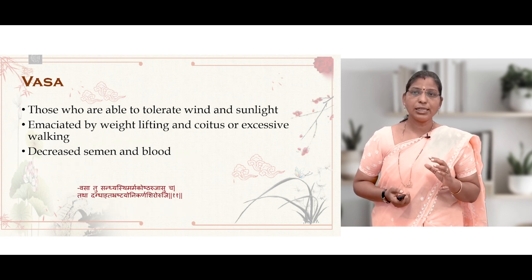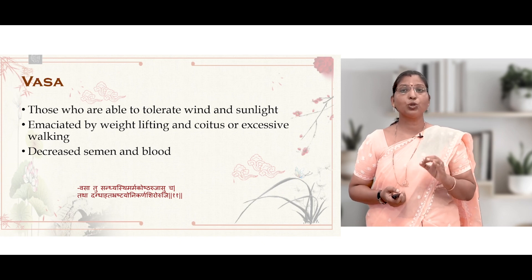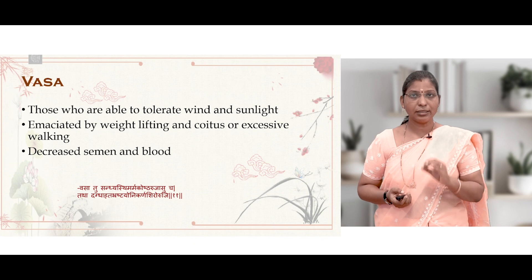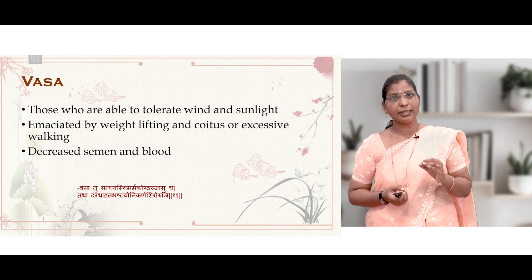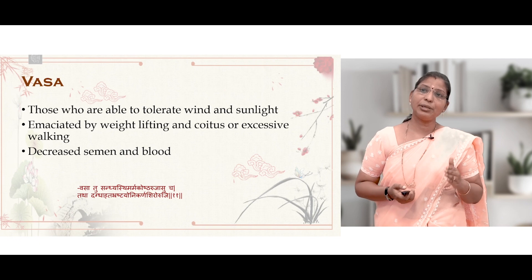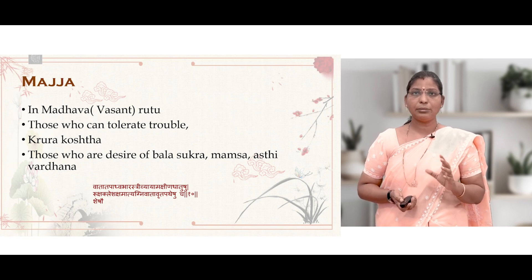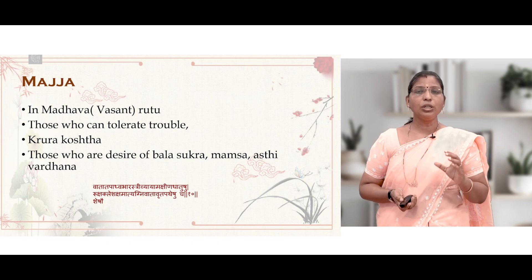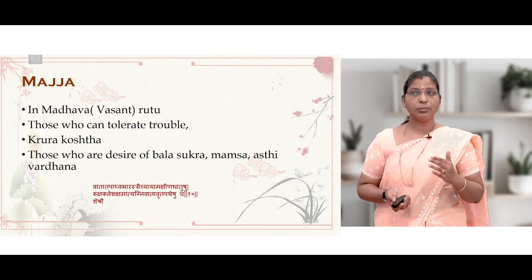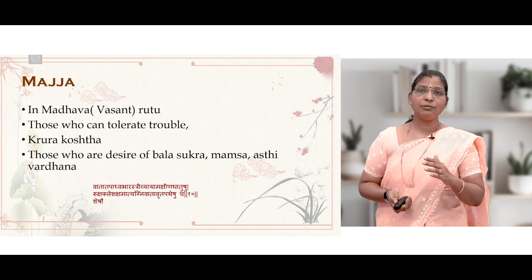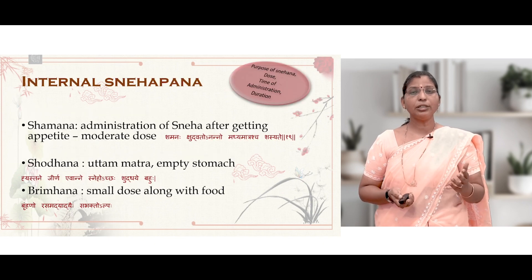Vasa is indicated for Sandhi, Asthi, Marma, Koshta conditions, burns (Dagdha), injuries (Ahata), Bhrashtayoni, Karnaruja, and Shiroruja. Those who can tolerate wind and sunlight, those emaciated by weight-lifting, coitus, or excessive walking, and those with decreased semen and blood are indicated for Vasa Sneha Pana. For Majja, the time of administration is Madhava Rutu. Both Vasa and Majja are indicated for those with Krura Koshta and those desiring Bala, Shukra, Mamsa, and Asthi Vardhana.